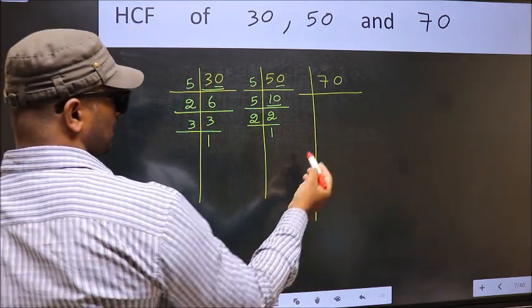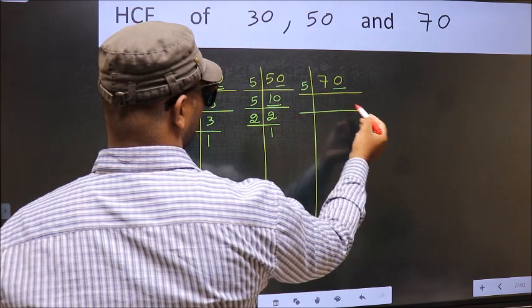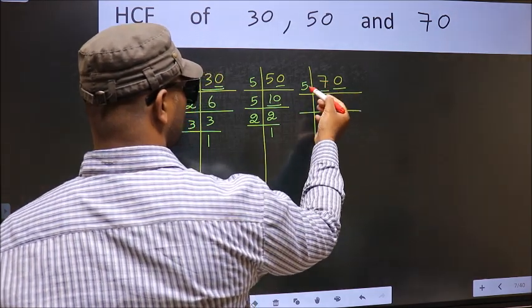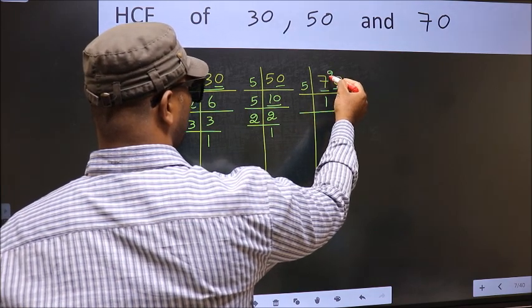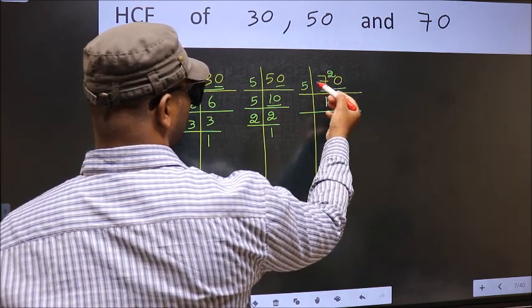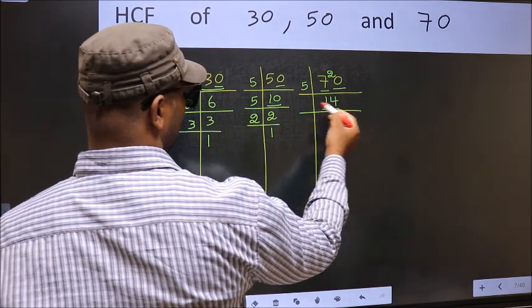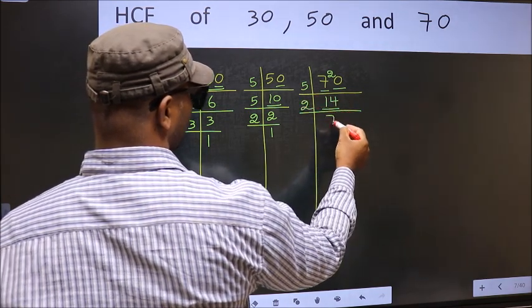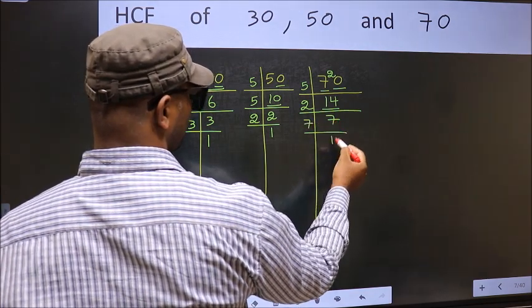Last digit 0, so take 5. First number 7, a number close to 7 in 5 table is 5 times 1 is 5. 7 minus 5 is 2, 2 carried forward, 20. When do we get 20 in 5 table? 5 times 4 is 20. Now 14 is 2 times 7 is 14. Now 7 is a prime number, so 7 times 1 is 7.